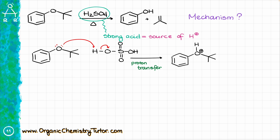If that carbocation was a really bad idea, what if I cleave my bond on the right side? In that case, I'm going to get a phenol, and I'm also going to get a tertiary carbocation. And as we know, tertiary carbocations are perfectly fine — they are comparatively stable and they can easily form. So that is what we're going to get in this case.